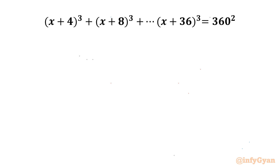Welcome back to Infigyan, my dear friends. In this video we are going to take up another very interesting question from algebra. We are going to solve the cubic equation: (x+4)³ + (x+8)³ + ... + (x+36)³ = 360². We have to calculate all three solutions.